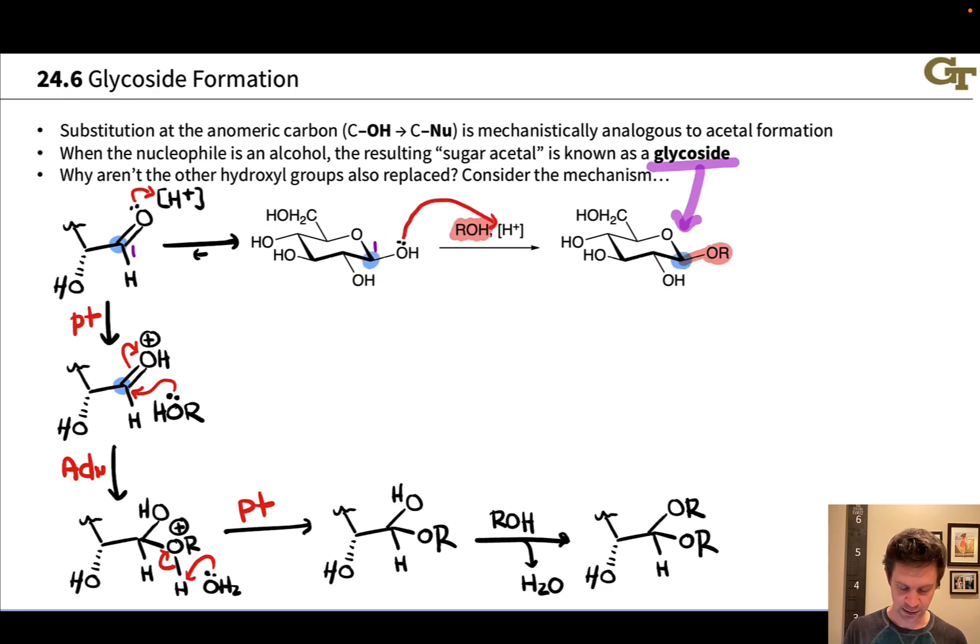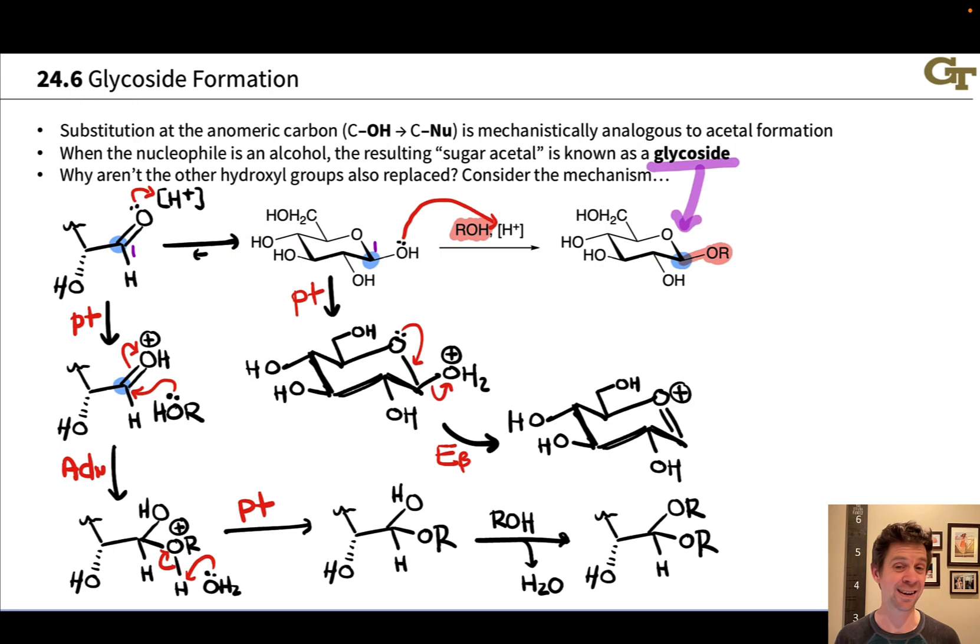Only that protonation leads to a productive subsequent step. And the step that occurs is the elimination of water from this cation to produce a resonance stabilized cation. A beta elimination in our mechanistic language. This cation right here is resonance stabilized. The resonance structure we've drawn has positive charge on the oxygen, but there is a second resonance form with positive charge on carbon that you should definitely pause and draw to make sure you understand why this is a relatively stable cation.